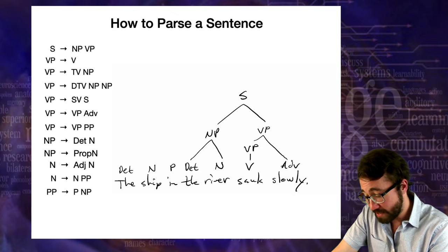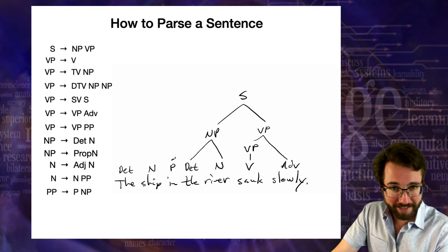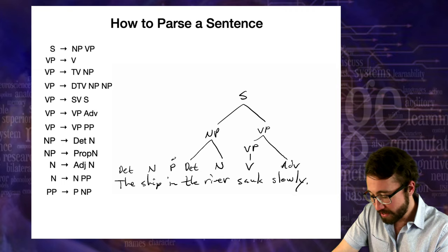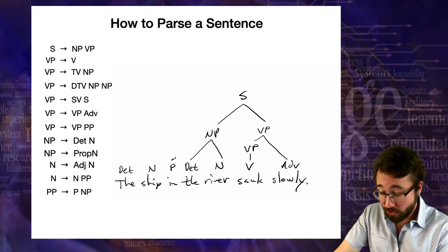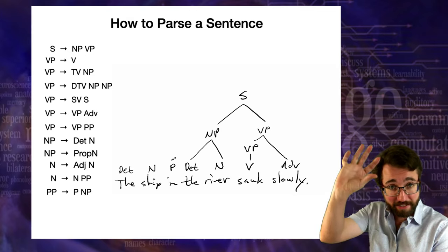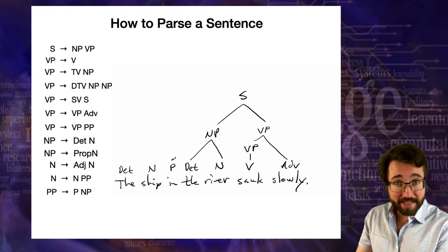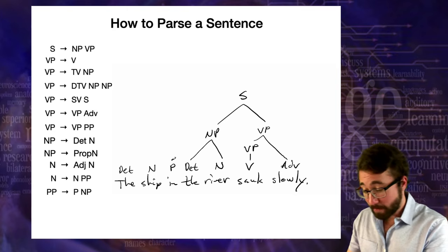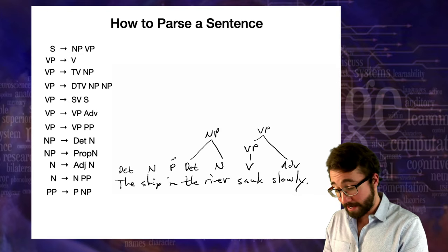What we're left with is a P followed by an S. There's nothing in our rules that has P followed by S. So this is not going to work — we're going to have to backtrack. There's no way to build a single tree with S on top of the entire sentence using this structure. We need to try again.